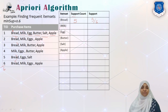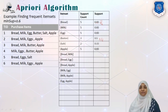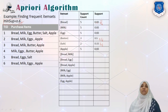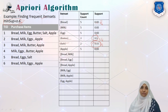Similarly, milk appears 5 times, giving support 5/6. Calculating for all items, we find support of butter is 3/6 = 0.5 and support of salt is 2/6 = 0.33. Since both 0.5 and 0.33 are less than the minimum support of 0.6, we discard butter and salt from our frequent item set. The remaining items — bread, milk, egg, and apple — satisfy minimum support and proceed to the next step.